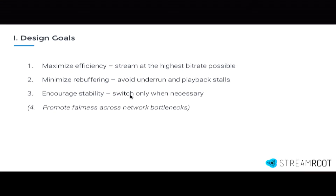Only switch bitrates when it's actually necessary because of changes in network conditions. We can actually add a fourth criteria that is quite prevalent in a lot of the research that's been done on ABR algorithms, and that's to promote fairness — the idea of a fair allocation of network resources, especially concerning devices that are sharing a bottleneck.